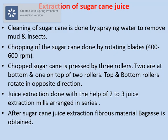The chopped sugarcane is pressed with the help of three rollers — two rollers at the bottom and one at the top, which rests on the two bottom rollers. The top and bottom rollers rotate in opposite directions. Extraction of juice is done with the help of two to three extraction mills, and these mills are arranged in series.